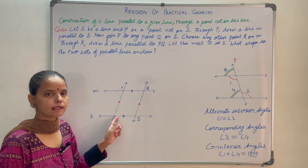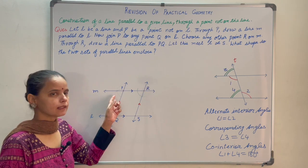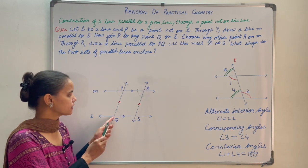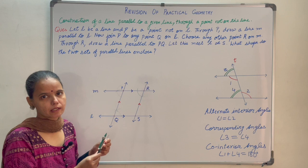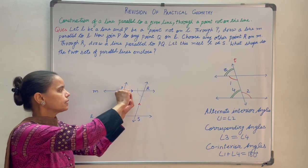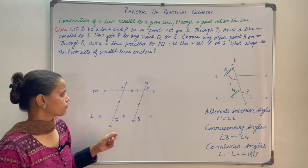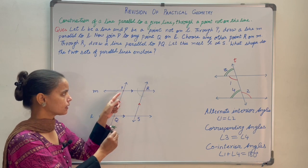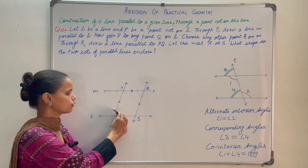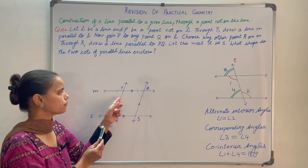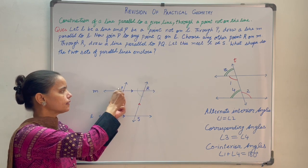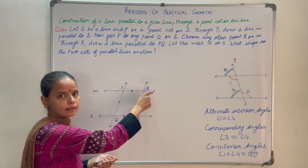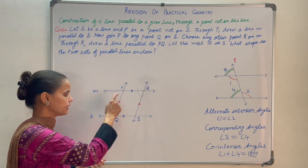The moment you draw this transversal, one angle is formed. We are going to copy this angle at P. To do that, take your compasses, keep the compass needle at the intersection point on L, and make an arc with any convenient radius. With the same radius, keep the compass needle at P and make an arc. Now measure the opening of the arc at the lower intersection and replicate it at P to get the point of intersection. Join this point of intersection to P and extend the line to get line M.